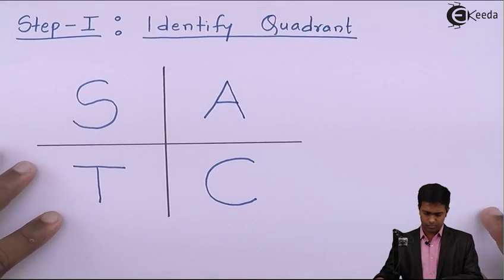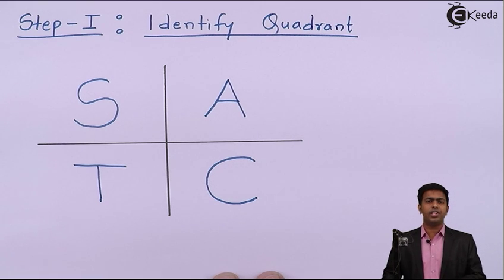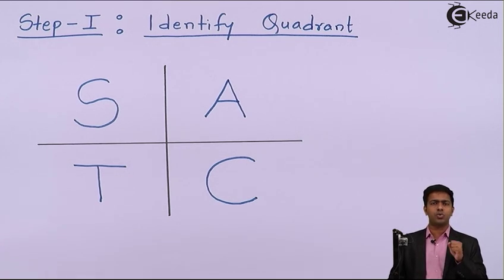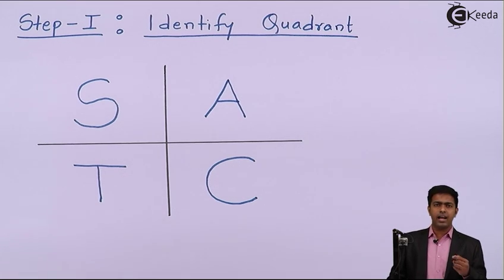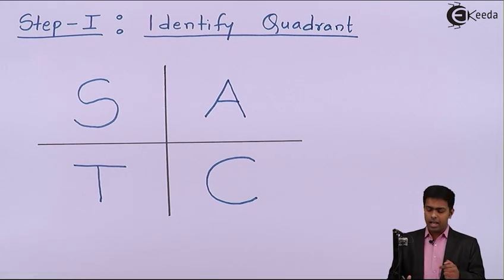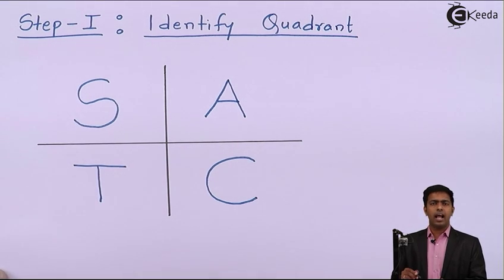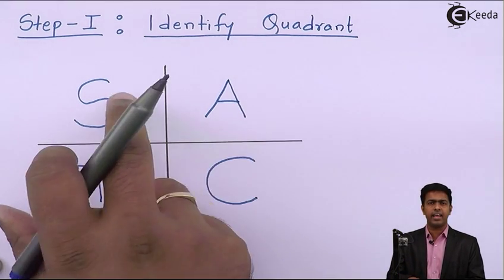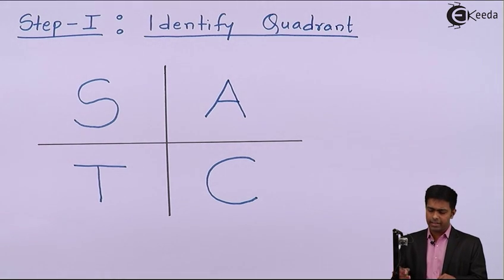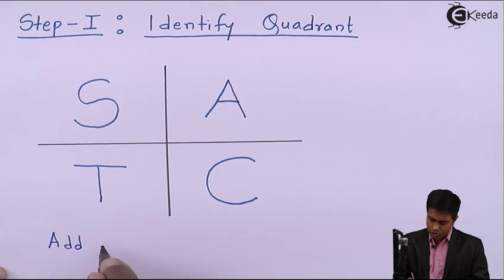Basically it is a two-step process. Step one is called identifying the quadrant. I have drawn the four quadrant system where in the first quadrant all trigonometric ratios are positive, in the second quadrant sine and cosec are positive, in the third quadrant tan and cot are positive, and in the fourth quadrant cos and sec are positive. I have written A for all, S for sine and cosec, T for tan and cot, and C for cos and sec.